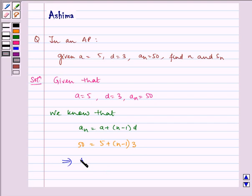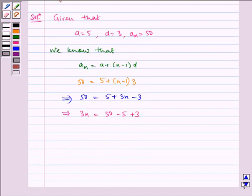Which implies 50 is equal to 5 plus 3n minus 3, which implies 3n is equal to 50 minus 5 plus 3, which implies 3n is equal to 48, which implies n is equal to 16.